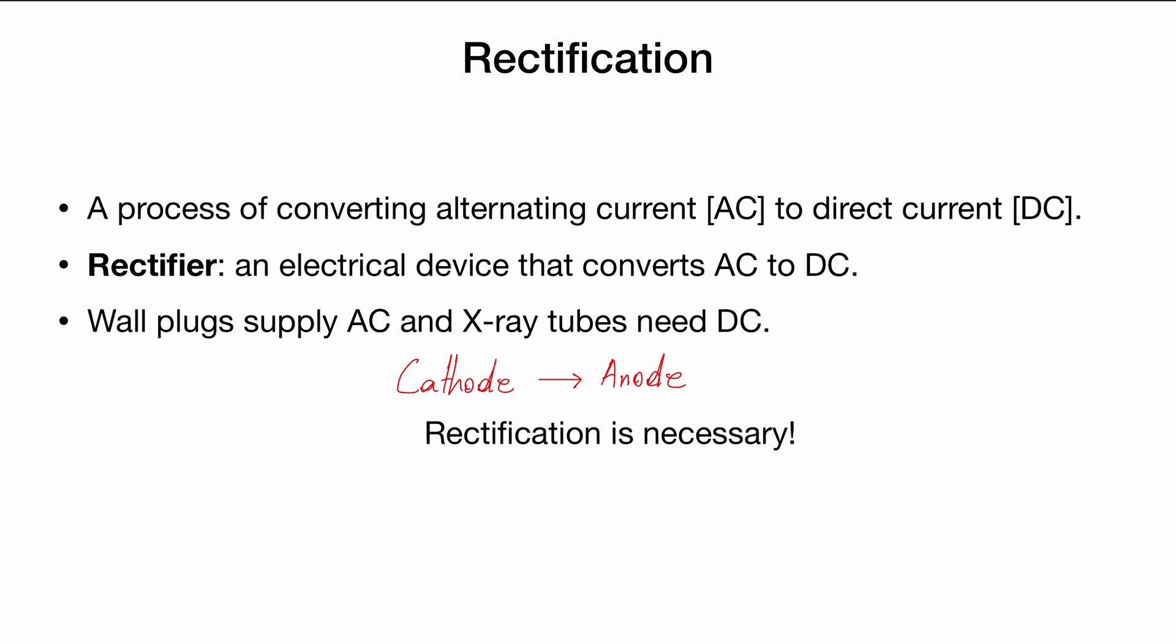However, the way we receive electricity or supply electricity in our hospitals is in the form of an AC, that is current that is going back and forth, current that is alternating its direction. Because of this, we need to have a way of converting the incoming AC from our power source into a DC, which we can use for our X-ray tubes. So the point is, in the context of X-ray tubes, the process of rectification is necessary.